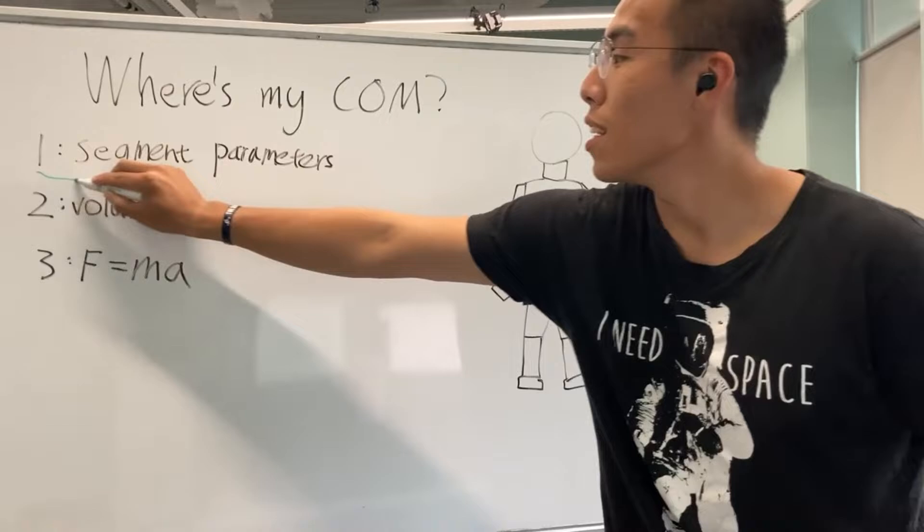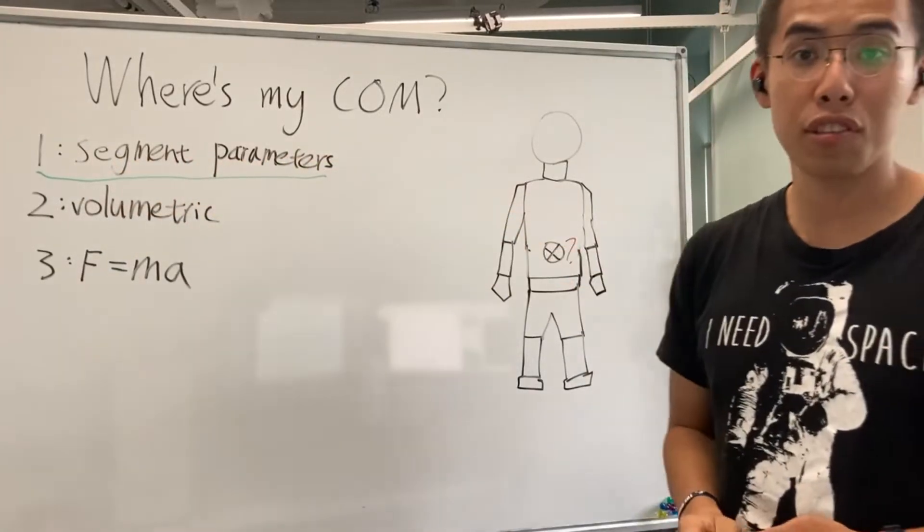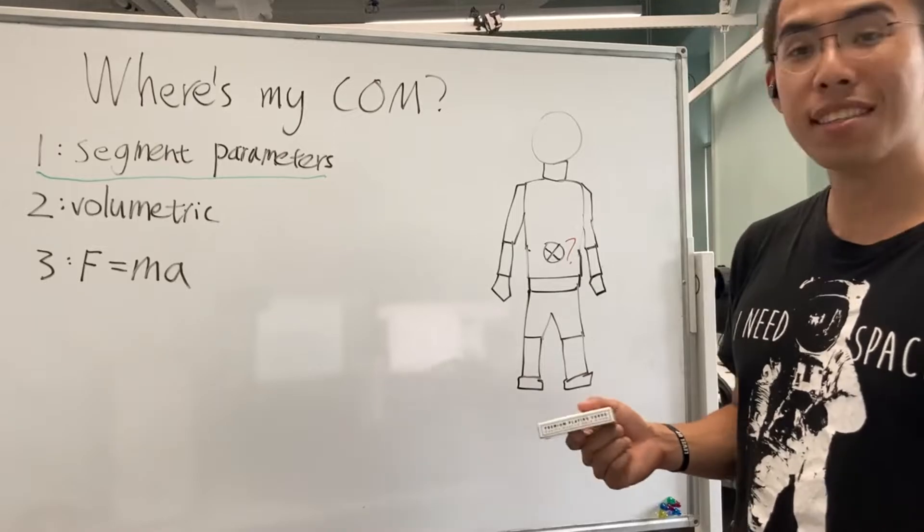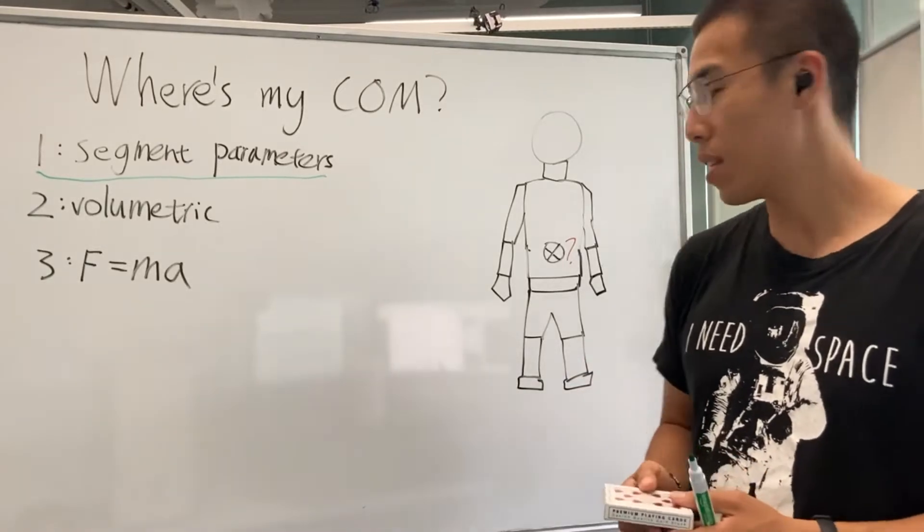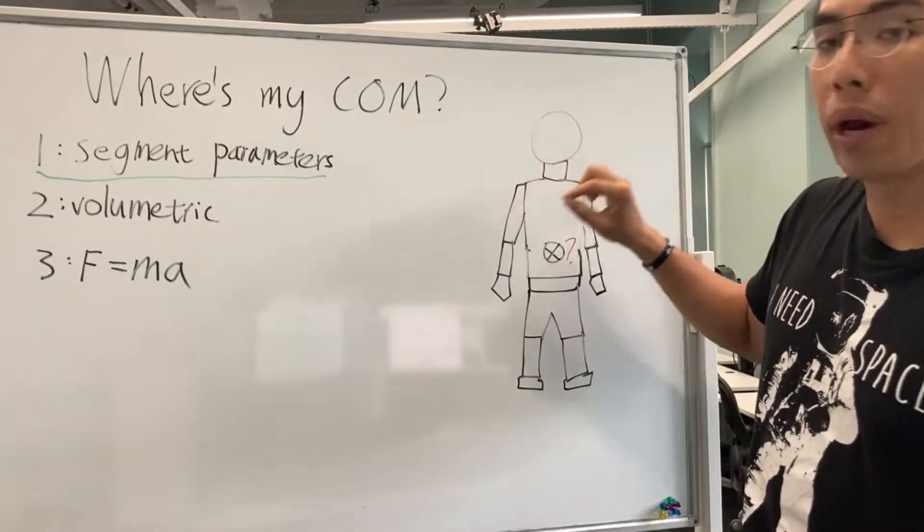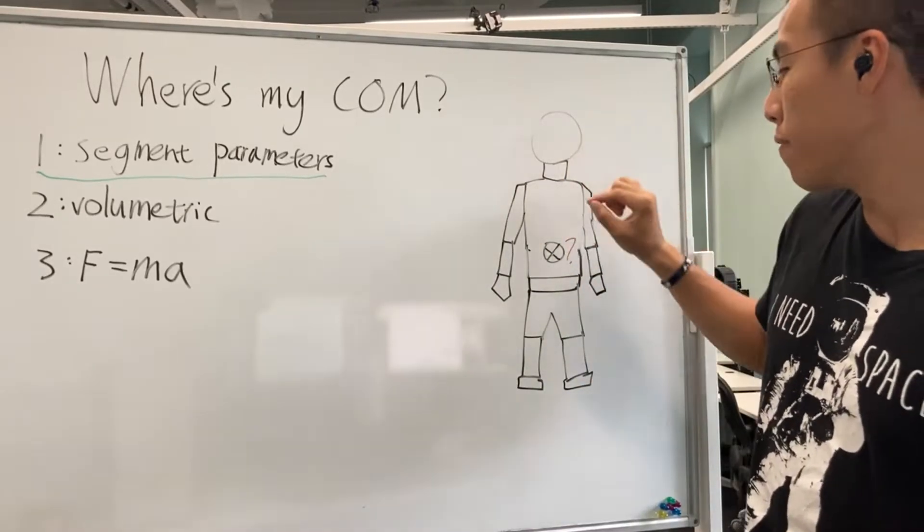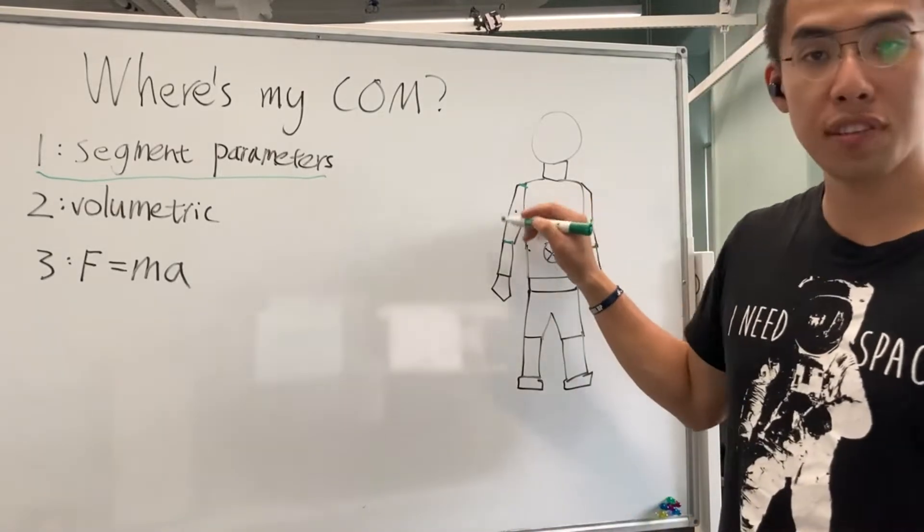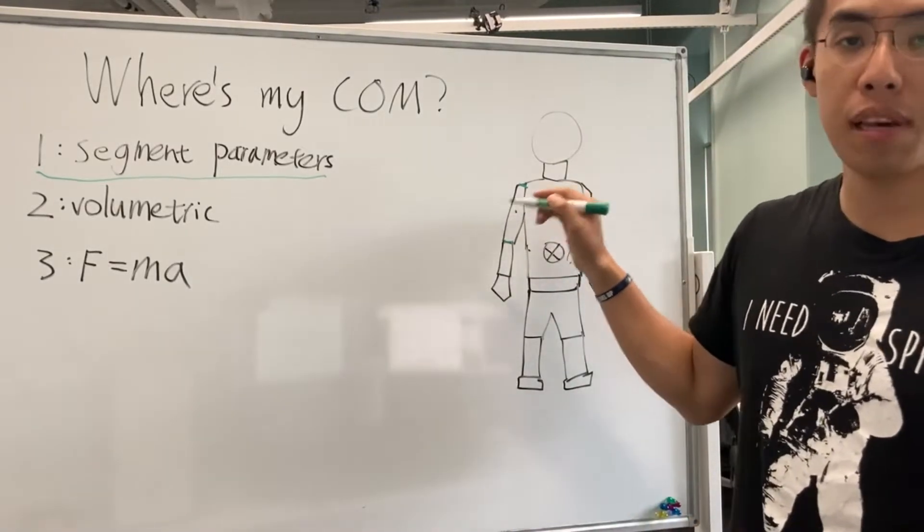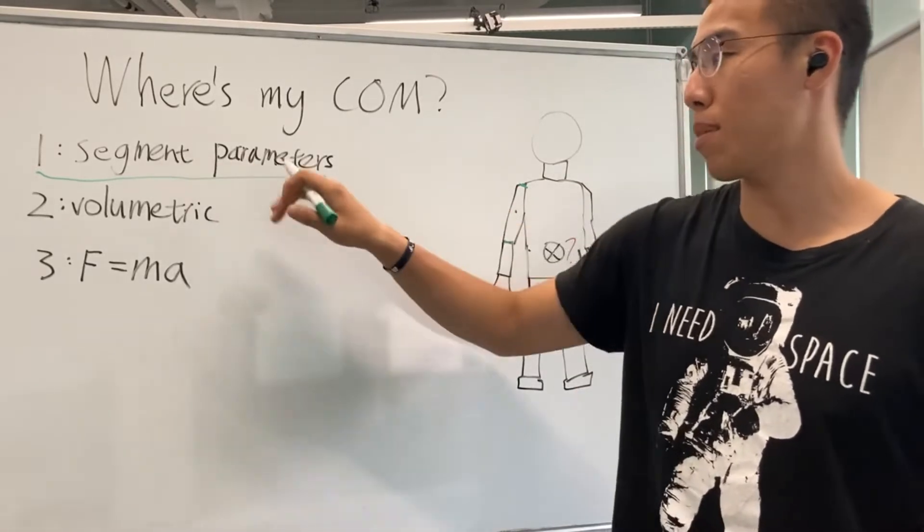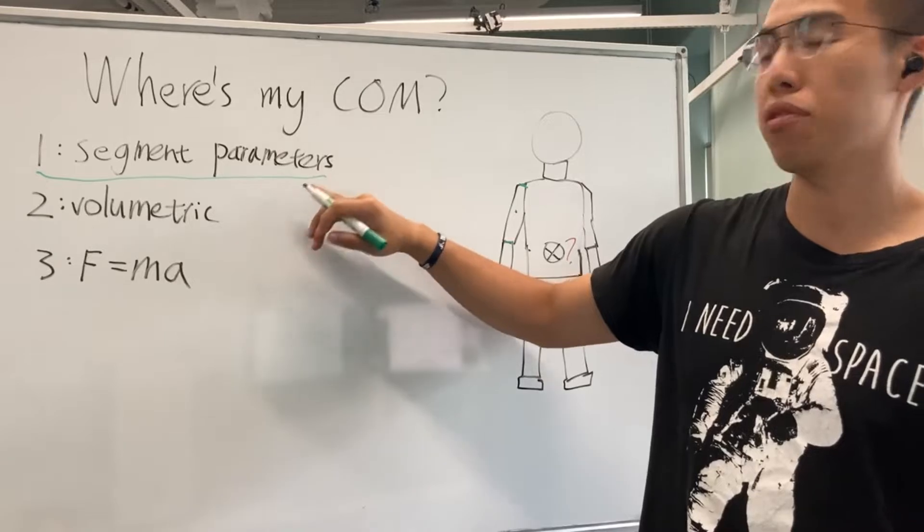The first one is using the established segment parameters published in the literature. Some researchers have already gone through the painstaking task of measuring the center of mass of each of the body segments, and therefore the center of mass of the entire body is simply a weighted sum of all of the individual body segments. However, this assumes that the center of mass for the segments for the initial research matches your current research. Therefore, it is very important to choose which of the segment parameters based on the people you are studying.